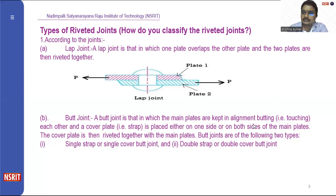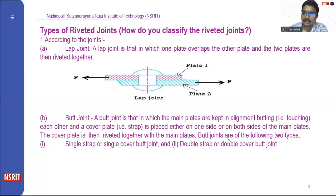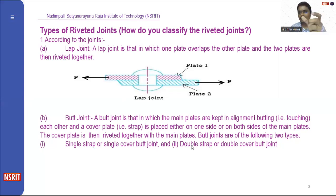Similarly, a butt joint is where the edges of the plates touch each other and a covering plate is placed on either side or both sides of the main plate. The cover plate is riveted together with the main plates. Butt joints have two types: a single strap joint and a double strap joint.